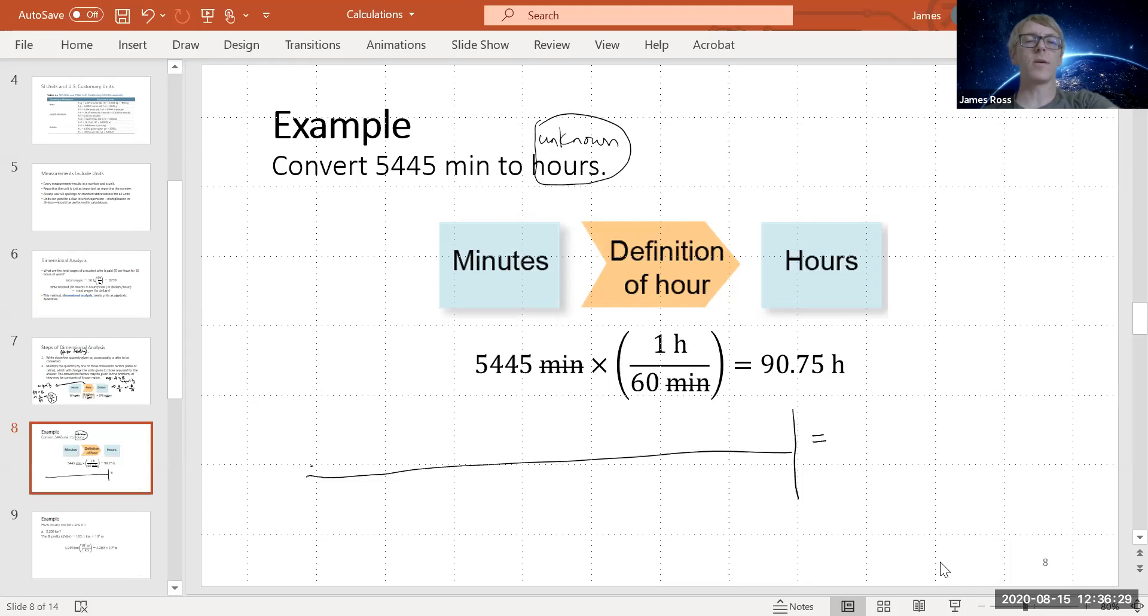My known, or my input, is minutes. So I'm going to construct it backwards. I know that I need hours as a product, so I write hours initially like this: hours equals hours. Then I'm looking for an equality that I know will link hours to minutes.